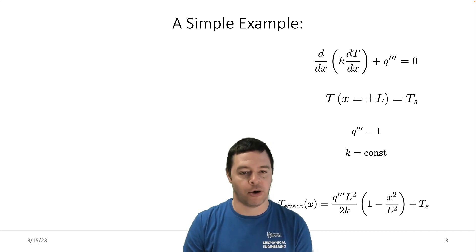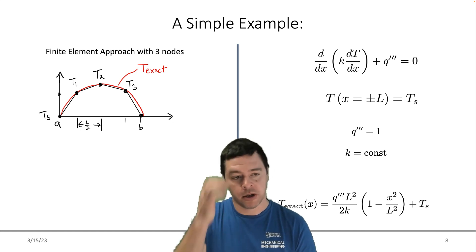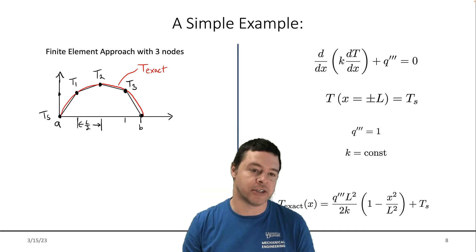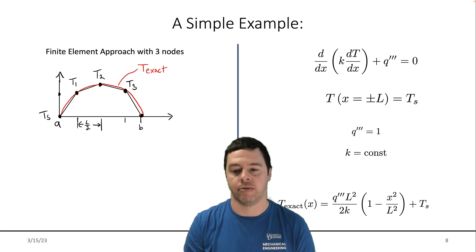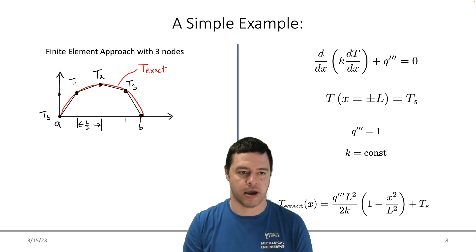So what I want to do is solve that problem using the finite element method. But I'm going to do it with a very small number of nodes so that I can actually do this by hand in a reasonable timeframe. So what I'm looking for is this exact solution. This is the red line, which is supposed to be a parabola that has value T sub S on the two boundaries between X equals minus L and X equals plus L.